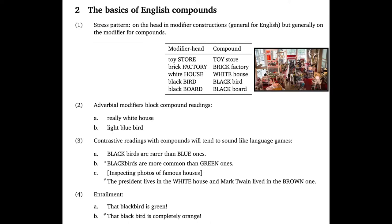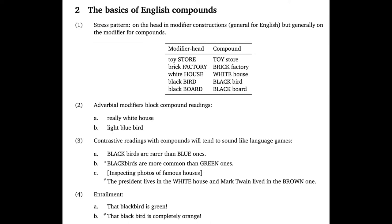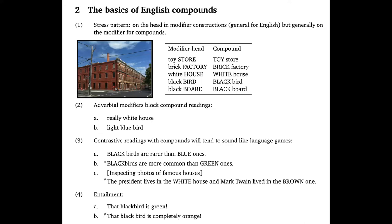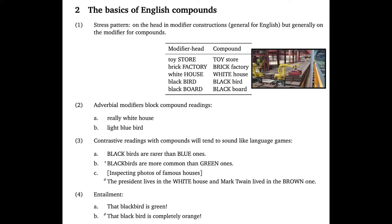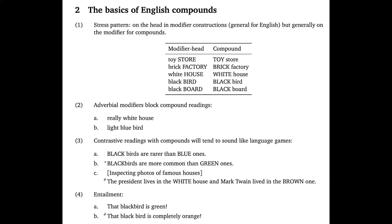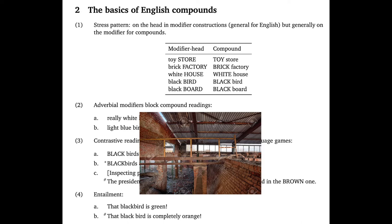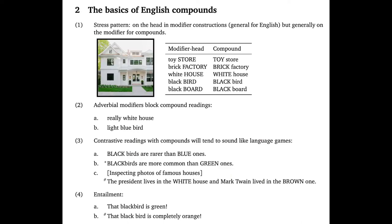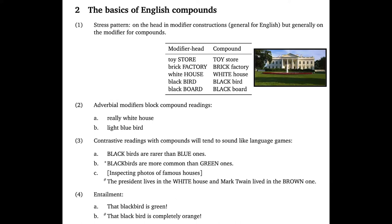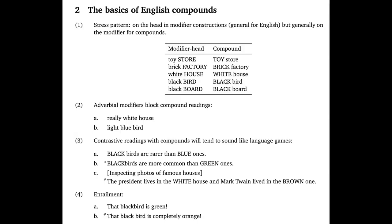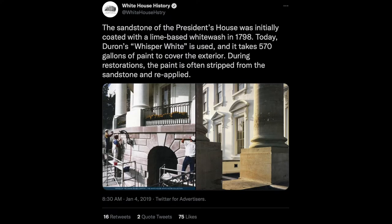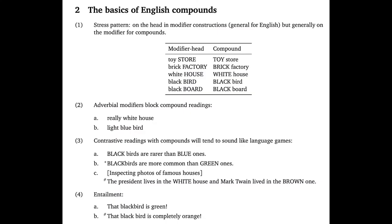By contrast, a 'toy store' as a compound is a real-life store that sells toys. Similarly, a 'brick factory' as a modifier-head phrase is a factory that is made of bricks — it could manufacture bicycles or the like — whereas the compound 'brick factory' is a factory that makes bricks; the building itself needn't use bricks in construction. A 'White House' as a modifier-head phrase is a house painted white, whereas 'the White House' is where the U.S. president lives — it needn't be painted white, and if repainted blue, we'd still call it the White House.